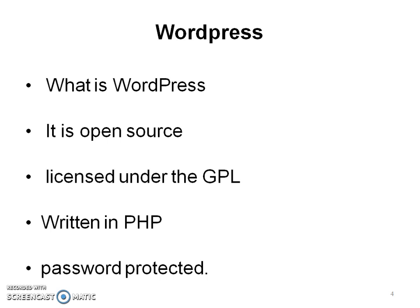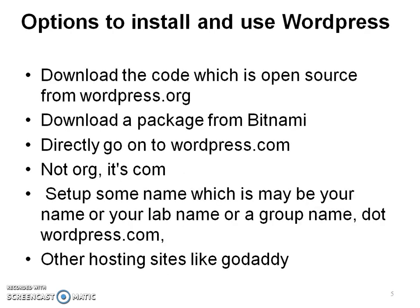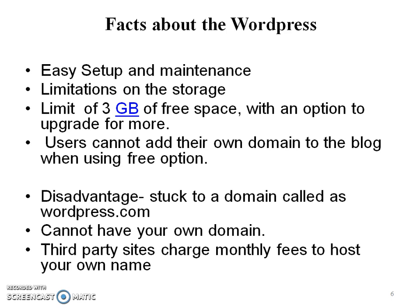A website programmed with PHP can have pages that are password protected. There are many options to install and use WordPress. You could download the code, which is open source, from WordPress.org. You could download a package from Bitnami. Or you could directly go on to WordPress.com — not .org, it's .com — and set up a name which may be your name or your lab name followed by .wordpress.com. Or there are other hosting sites like GoDaddy which can host your site. There are some storage limitations, but the setup and maintenance is also very easy. The only disadvantage in this case is you are stuck to a domain called WordPress.com.